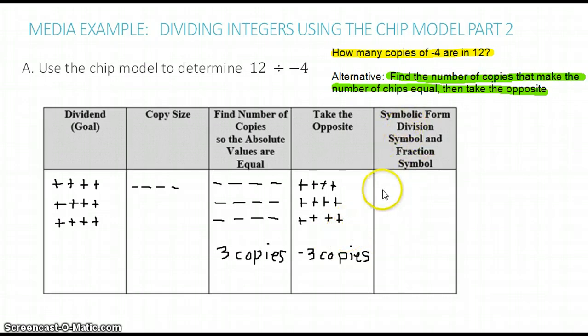Now let's write this in symbolic form. We have 12 divided by negative 4 equals negative 3.